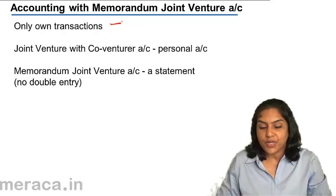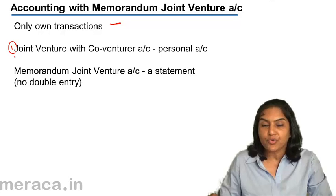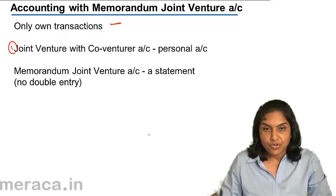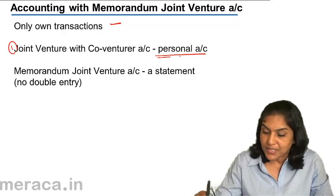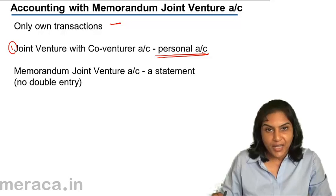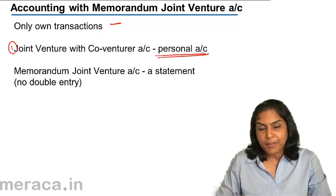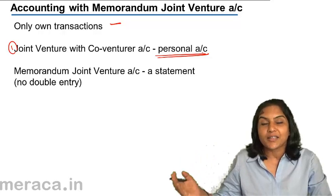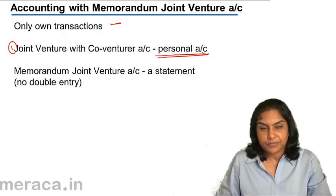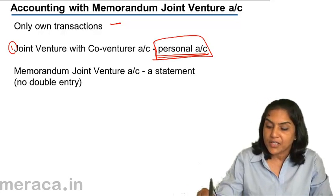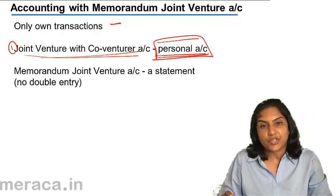The one account which is prepared is a joint venture with co-venturer account. Please note, this is not a nominal account — it is a personal account. This account will indicate the amount which is payable by the co-venturer to the other co-venturer, or receivable from the other co-venturer. It is not a joint venture account; it is the joint venture with co-venturer account.